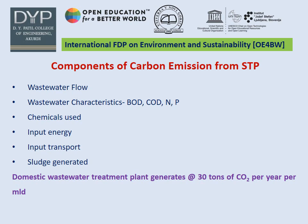Transport of treated wastewater as well as sludge from the treatment plant — including screenings, grit, compost, and ashes — all require disposal and transportation, which contributes to carbon emission. Overall, sludge generated from aerobic or anaerobic treatment leads to carbon emission. A domestic wastewater treatment plant typically generates about 30 tonnes of carbon dioxide per year per MLD of wastewater treated.